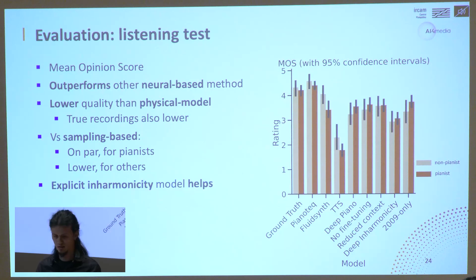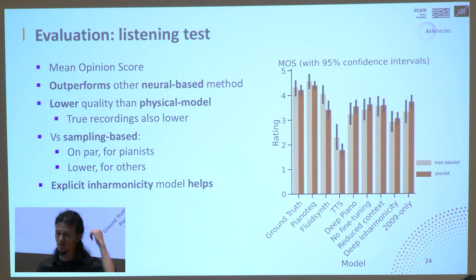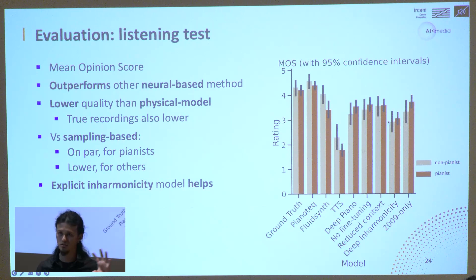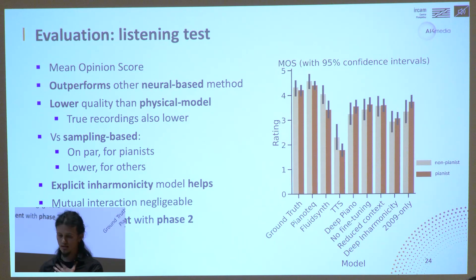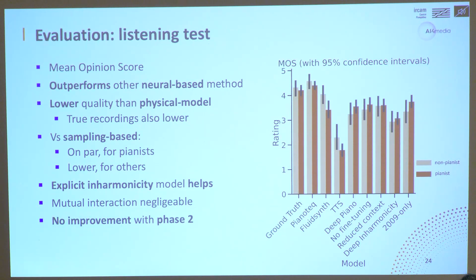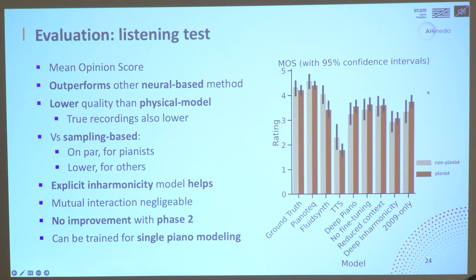As for the ablated variants, the sole significant improvement is the explicit inharmonicity model, which strictly outperforms the version replaced by a deep neural network black box. Compared to the reduced context and the fine-tuning of training parameters, there are no significant improvements. The model can be trained for single piano modeling with only two hours of data, which is promising.